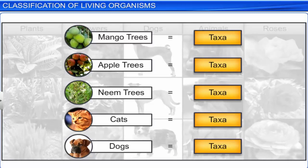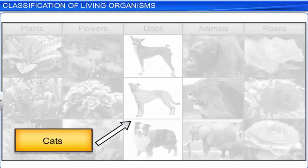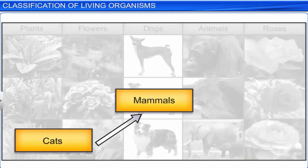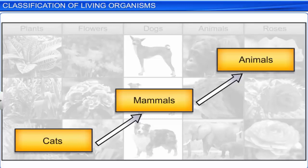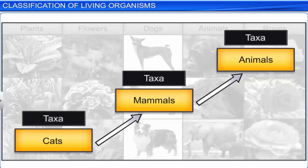Here, each of the groups — namely mango trees, apple trees, neem trees, cats and dogs — are all taxa. However, a cat is a mammal, and all mammals come under animals. Therefore, a cat, mammals, and animals represent taxa at different levels. This process of classifying living organisms into different taxa, based on their characteristics, is called taxonomy.